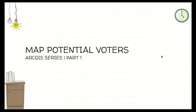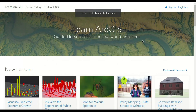So in Patreon, you're going to map potential voters' addresses. Before we can begin, we'll need to have an ArcGIS Online account. And for the sake of this tutorial, I'll be using Learn ArcGIS.